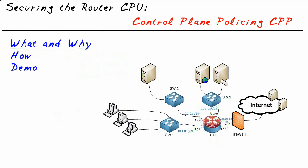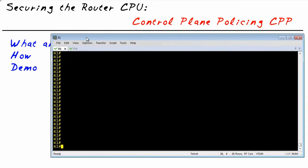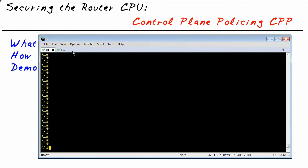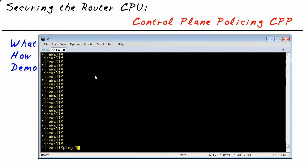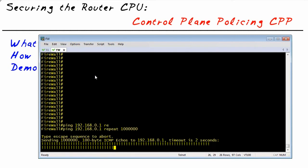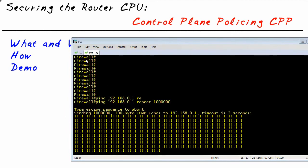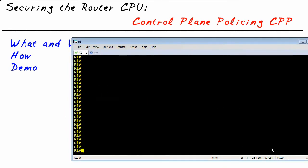Let's bring in our router and firewall, do some quick benchmarks, and then implement rate limiting and policing on the Control Plane Interface. From the firewall, I'll go ahead and set a bunch of pings going. It's just going to run and run until I tell it to stop. Then we'll go to the router itself and implement Control Plane Policing of traffic.